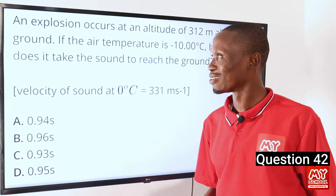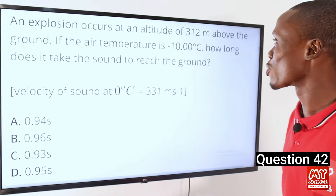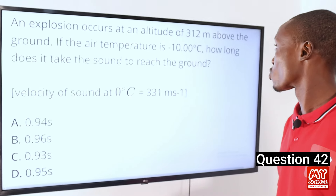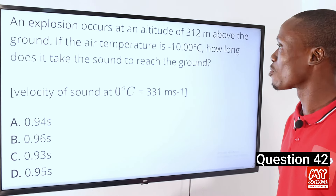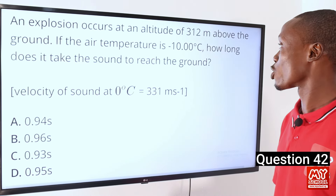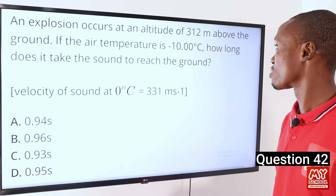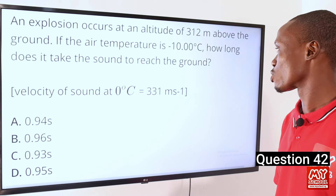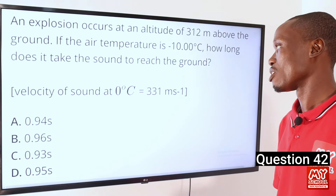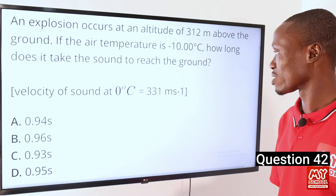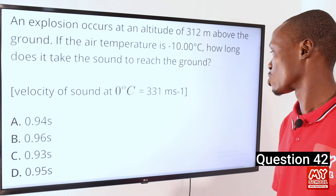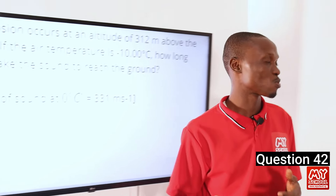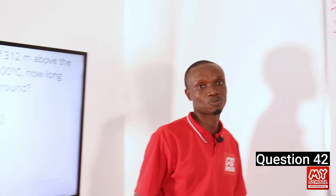Question 42. An explosion occurs at an altitude of 312 meters above the ground. If the air temperature is minus 10 degrees Celsius, how long does it take the sound to reach the ground? The velocity of sound at 0 degrees is given as 331 meters per second. So let's move over to the board to solve this question.